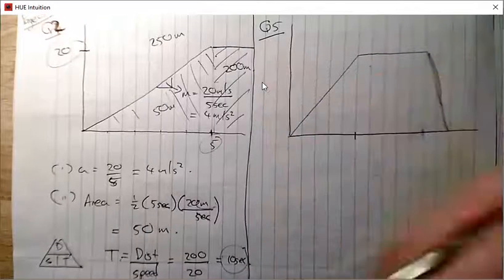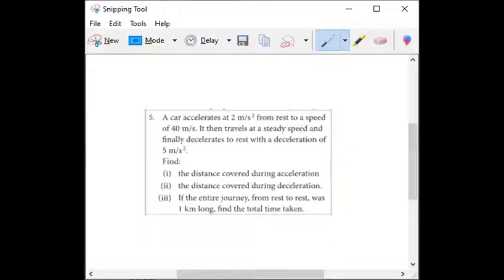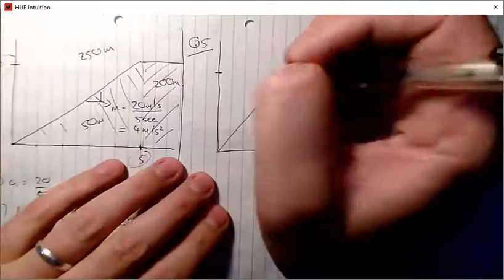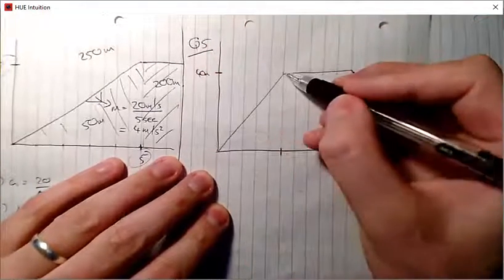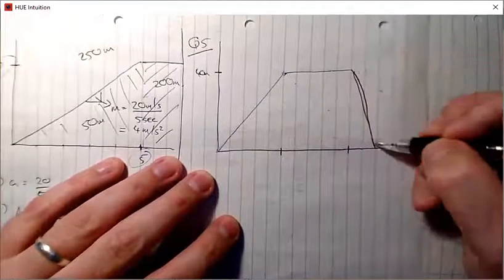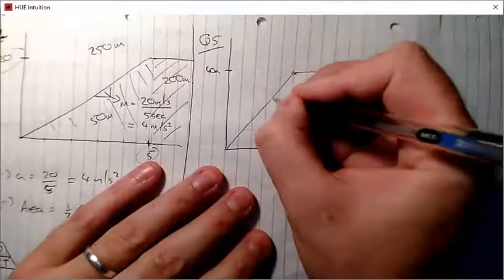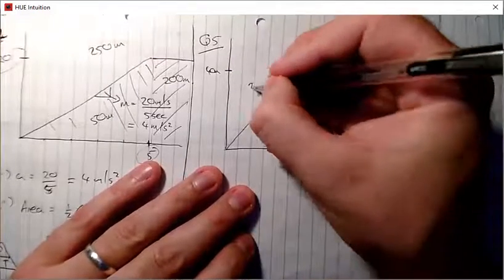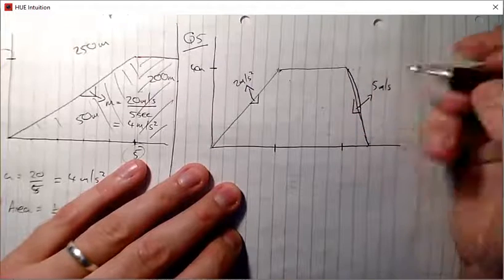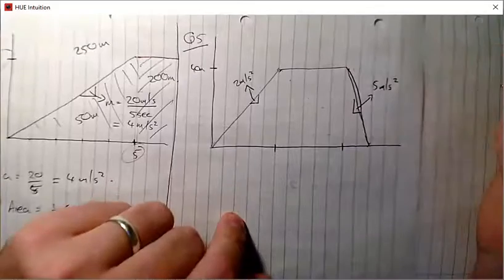Question 5: a car accelerates at two meters per second squared from rest to a speed of 40 meters per second, then travels at steady speed, and finally decelerates to rest at five meters per second squared. The velocity-time graph rises to 40, stays flat, then drops back to zero. The slope during acceleration is two meters per second squared and the slope during deceleration is five meters per second squared (negative, going down).